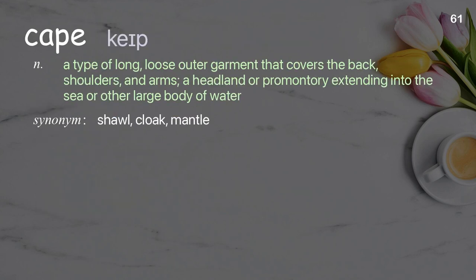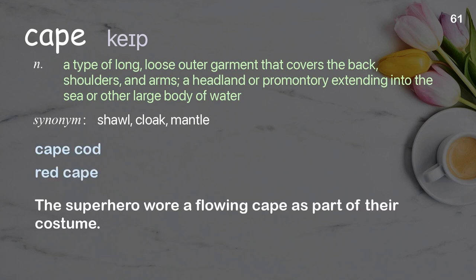Cape. A type of long, loose outer garment that covers the back, shoulders, and arms; a headland or promontory extending into the sea or other large body of water. Examples: Cape Cod; red cape. The superhero wore a flowing cape as part of their costume.